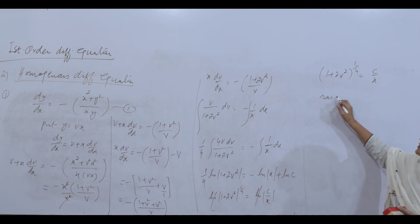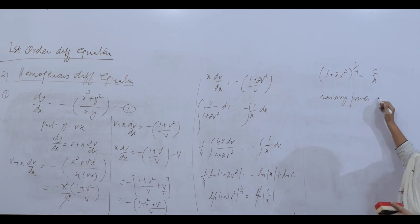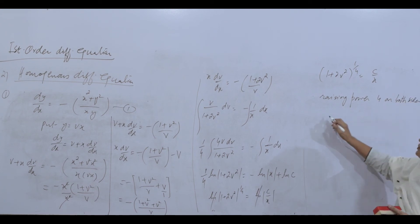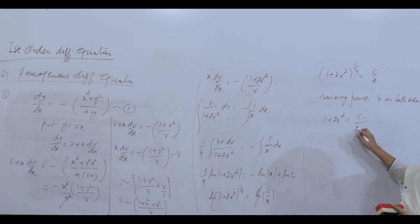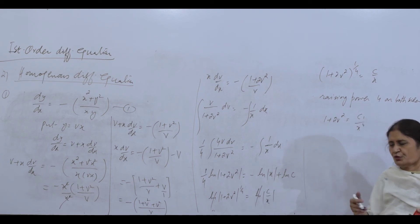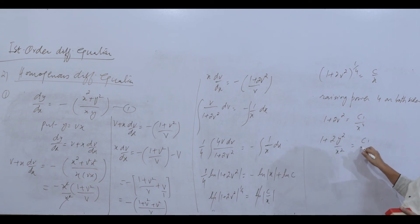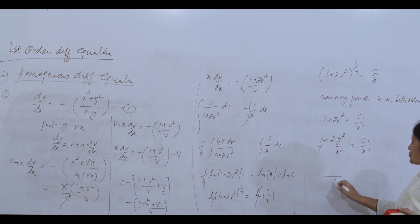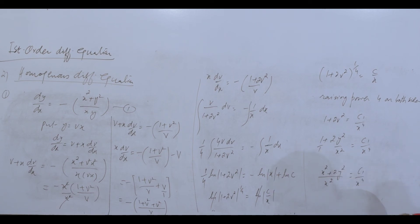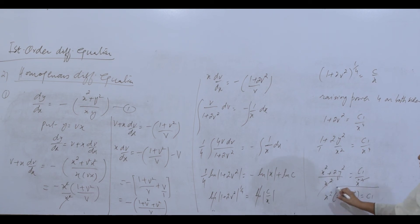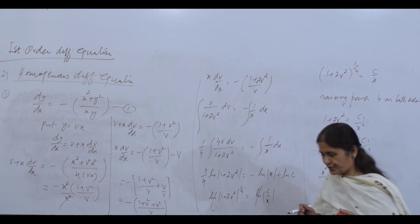Raising both sides to the power 4: 1 + 2v² = c₁/x⁴. Now substitute back v = y/x: 1 + 2(y/x)² = c₁/x⁴, so (x² + 2y²)/x² = c₁/x⁴. Multiply both sides by x²: x² + 2y² = c₁/x². Then multiply by x²: the required solution is x² + 2y² = c₁.